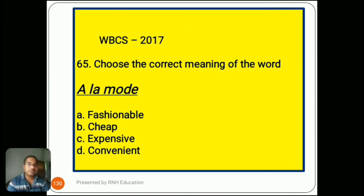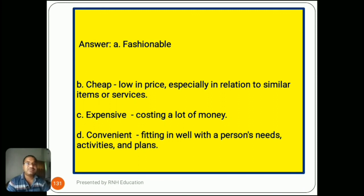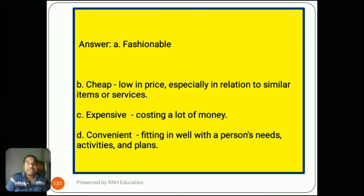Question number 65, from 2017: 'Choose the correct meaning — à la mode.' Options are A) fashionable, B) cheap, C) expensive, D) convenient. The answer is A) fashionable. Option B, cheap, means low in price, especially in relation to similar items or services. Option C, expensive, means costing a lot of money. Option D, convenient, means fitting in well with a person's needs, activities, and plans.